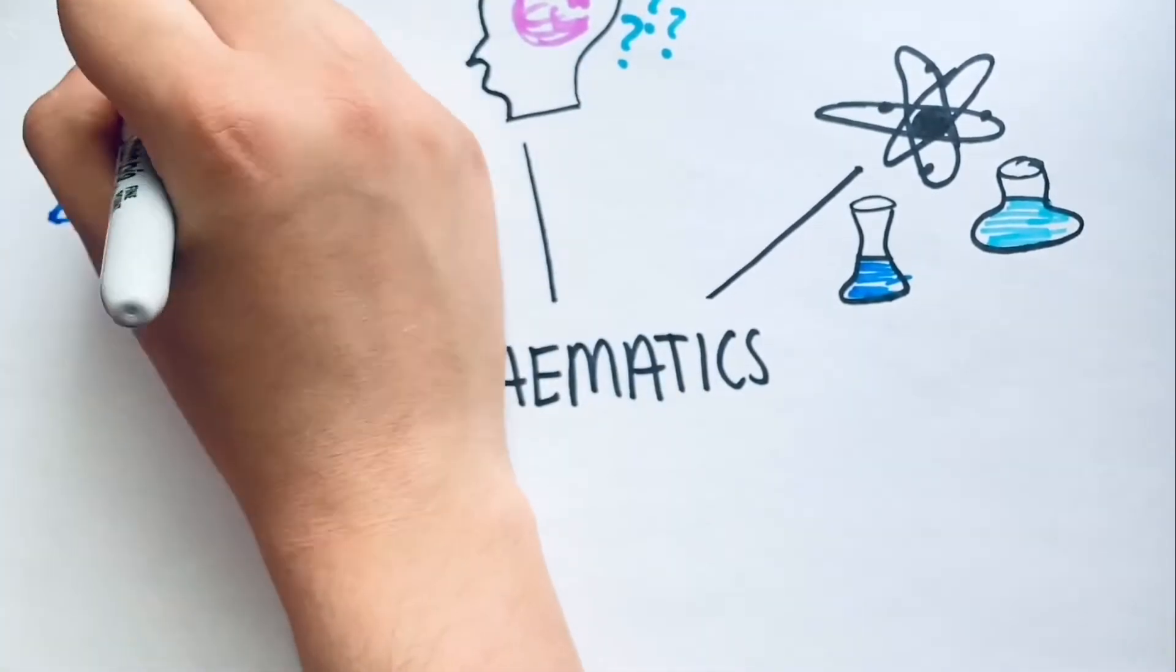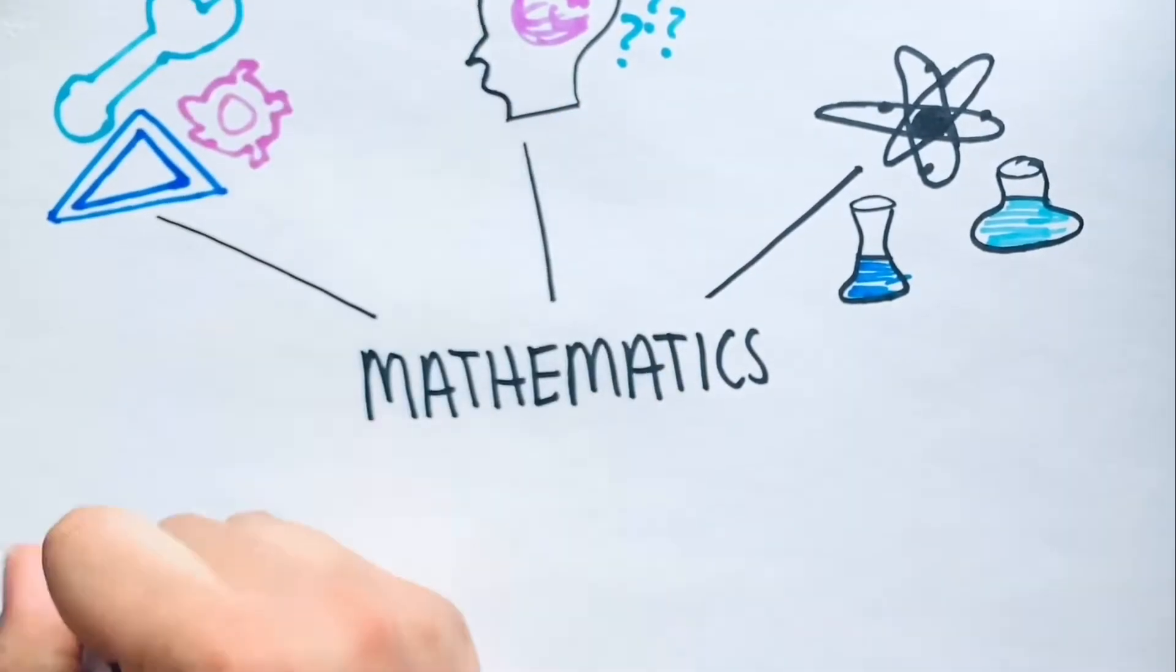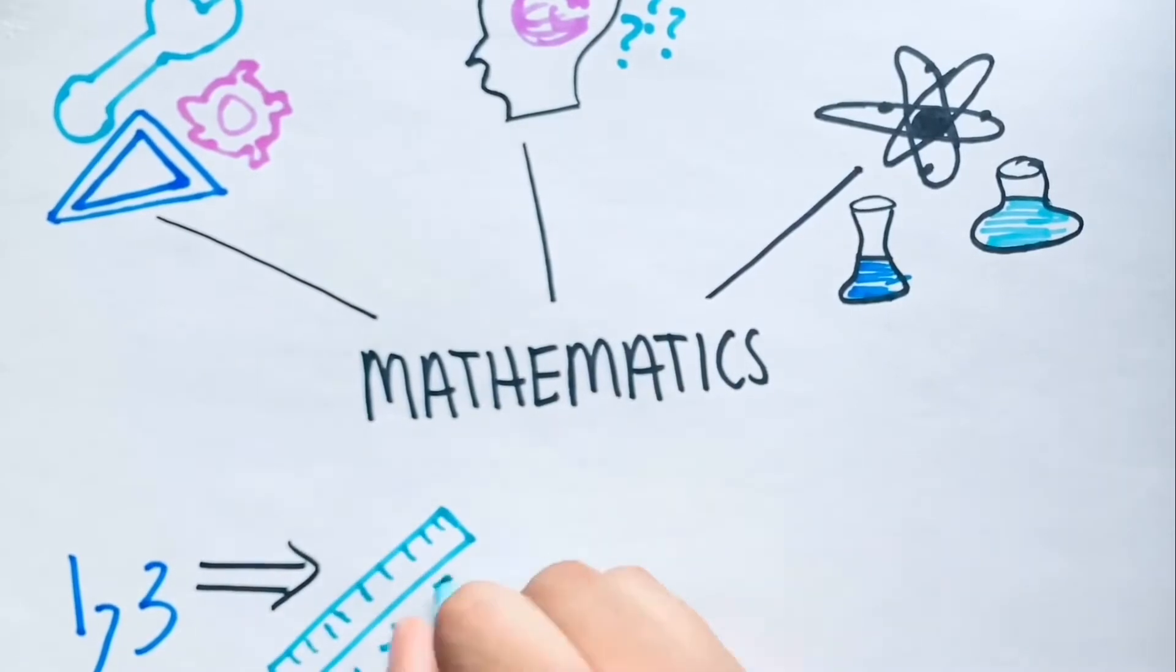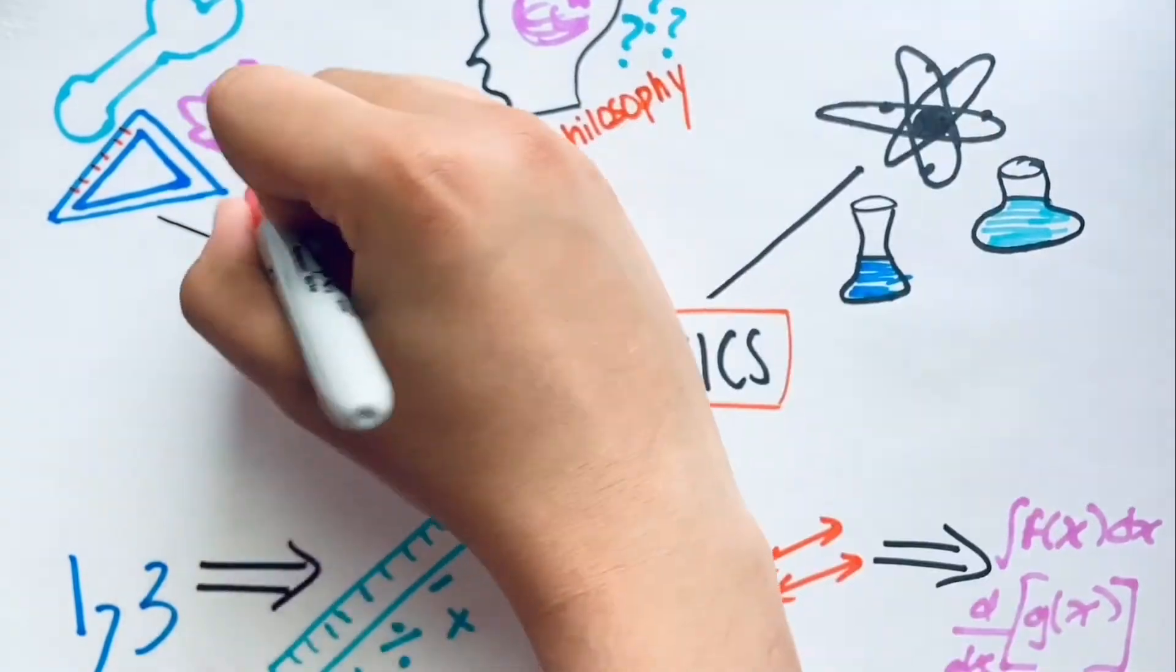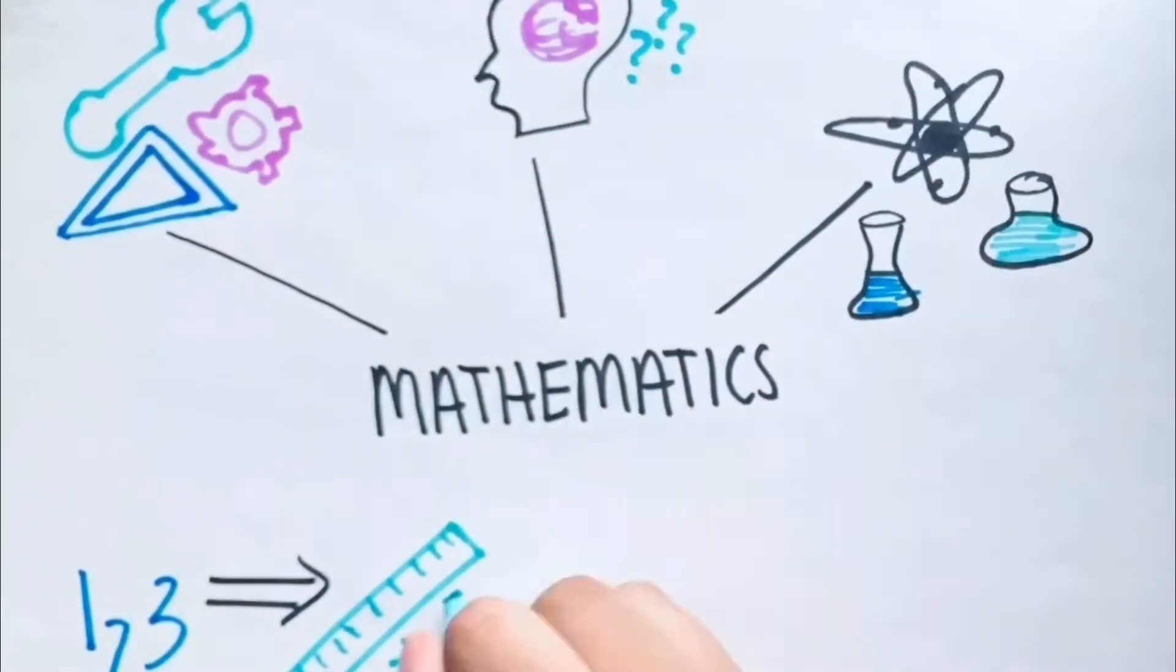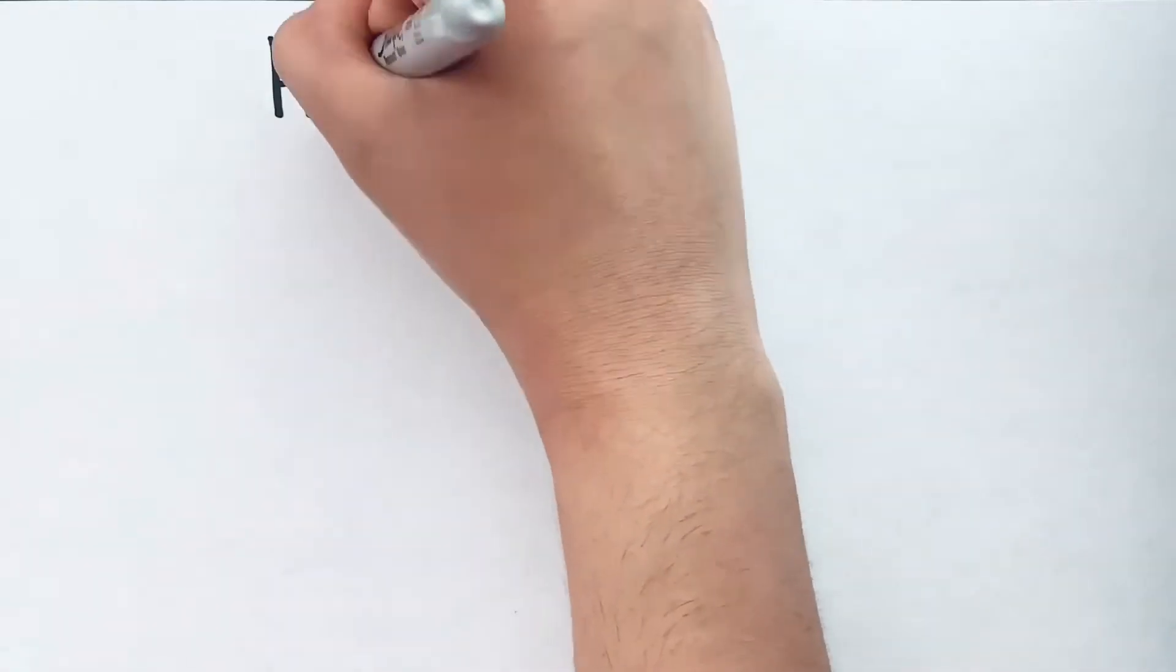and has evolved from simple counting, measurement, and calculation, and the systematic study of the shapes and motions of physical objects through the application of abstraction, imagination, and logic to the broad, complex, and often abstract discipline that we know today.